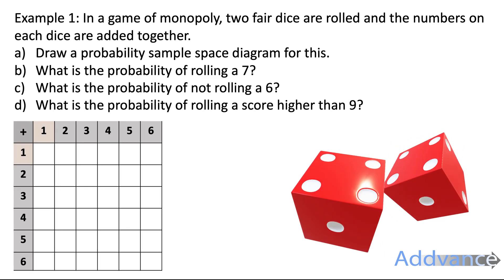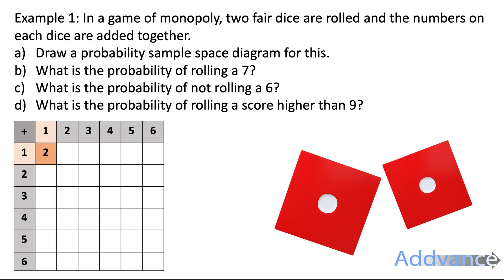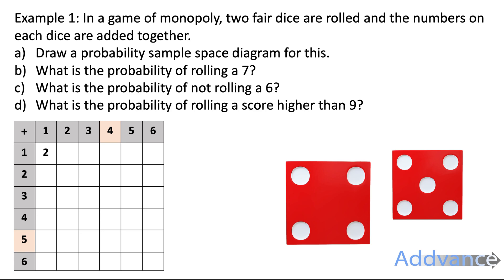For example, if the first dice rolls a 1 and the second dice rolls a 1, you can add those together to get the score, which is 2. If the first dice gets a 4 and the second dice gets a 5, you add them together and get a 9.